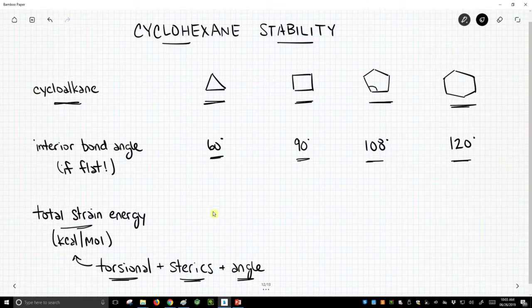For cyclopropane, we have a total strain energy of about 27.5 kcals per mole. Highly strained molecule, no surprise these bond angles are really compressed from their ideal value of 109.5.